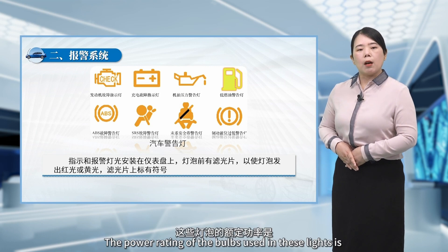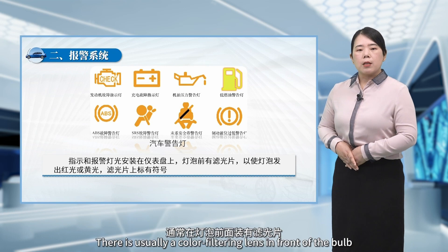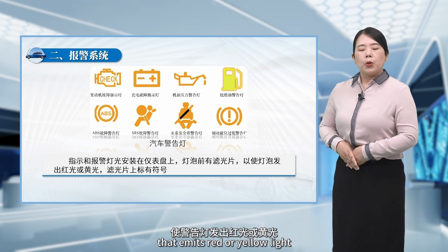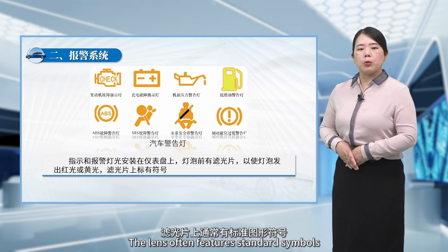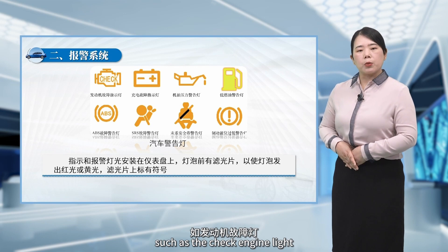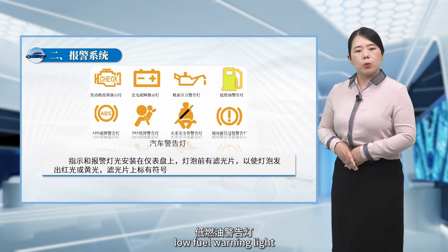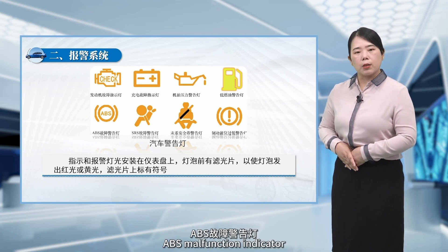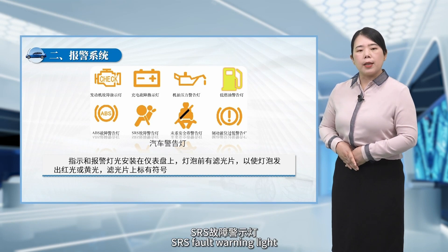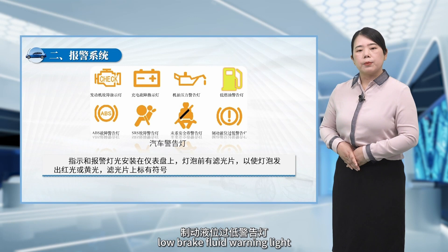The power rating of the bulbs used in these lights is typically one to four watts. There is usually a color filtering lens in front of the bulb that emits red or yellow light. The lens often features standard symbols, such as the check engine light, charging system fault indicator, oil pressure warning light, low fuel warning light, ABS malfunction indicator, SRS fault warning light, seat belts warning light, low brake fluid warning light, etc.